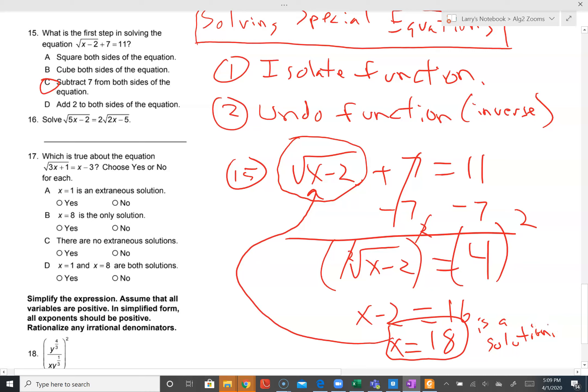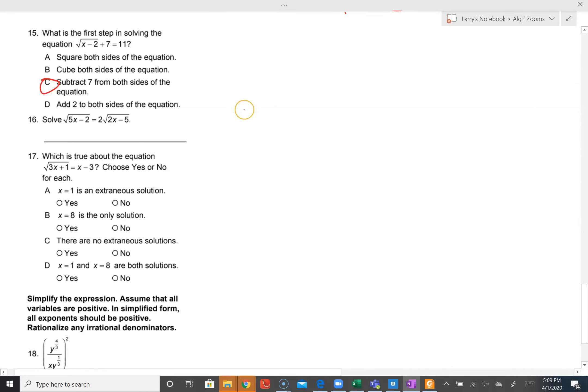Number sixteen. We have square roots on both sides. When we have square roots on both sides, we're going to square both sides. When you square the left side, the square cancels with the square root to leave five x minus two. When you square this side, you're squaring both. Two squared will be four. The square cancels with the square root to leave two x minus five, still multiplied.